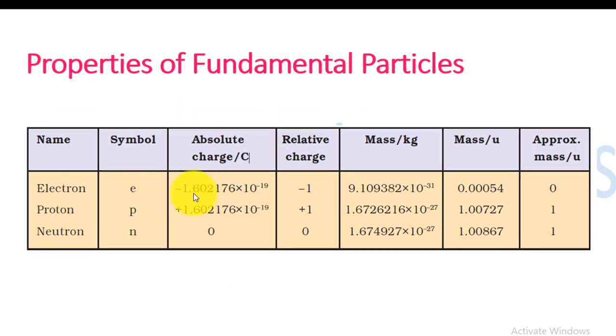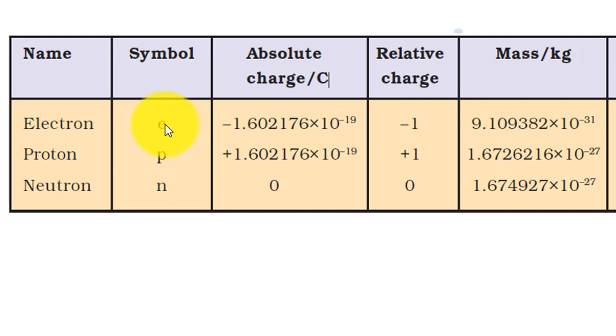Electron, whose charge is negative, is 1.602176 into 10 raised to power minus 19. Proton, whose symbol is small p, not capital P, is positively charged with equally opposite charge magnitude: 1.602176 into 10 raised to power minus 19. The difference is that one is negatively charged and the other is positively charged. Whereas neutron, whose symbol is small n, has charge equal to 0. It is neutral. Relative charge: electron is minus 1, proton is plus 1, and neutron is 0.